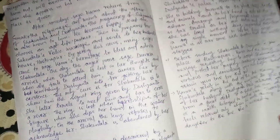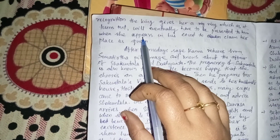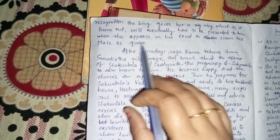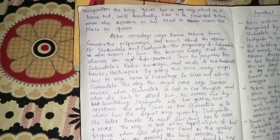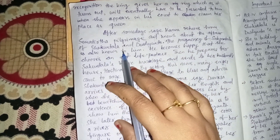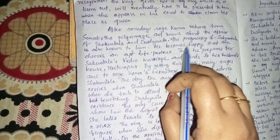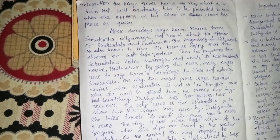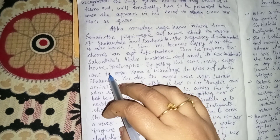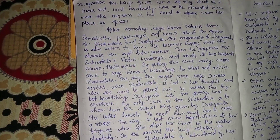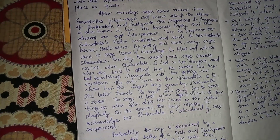They fall in love and get married in Gandharva style. Soon after, he leaves to take care of matters in the capital, Hastinapur. As a sign of recognition, the king gives her a ring, which she will eventually have to present to him when she appears to claim her place as queen. After some days, Sage Kanva returns from the Somatirtha pilgrimage and learns about the affair of Sakuntala and Dushyanta, including her pregnancy. He becomes happy that she has chosen an apt life partner.